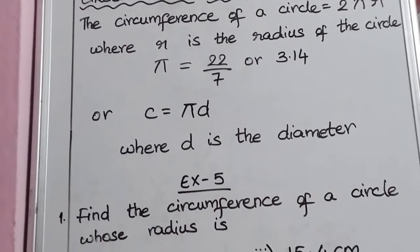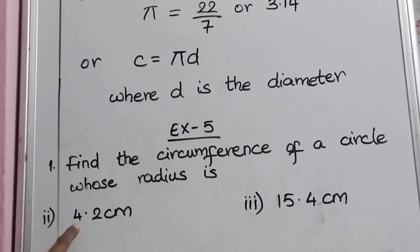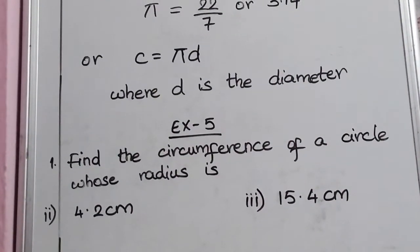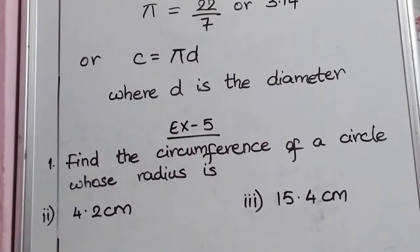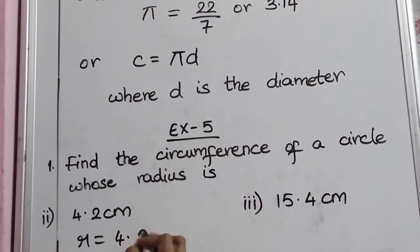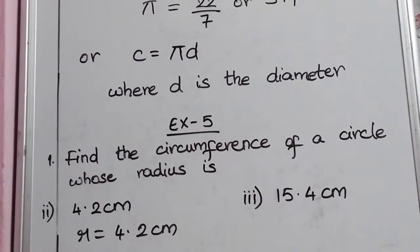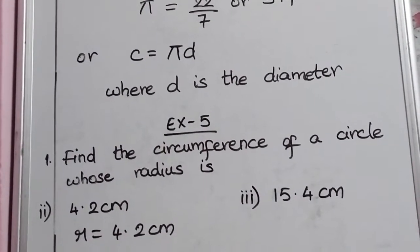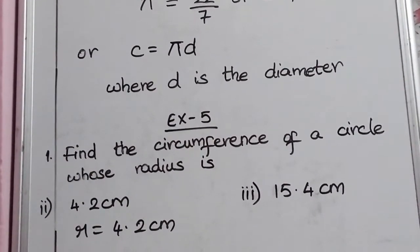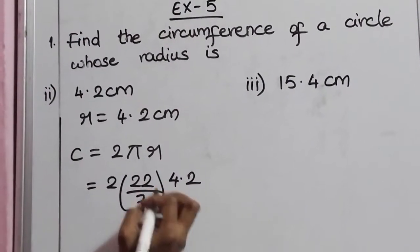Let us begin with Exercise 5, Problem 1. Find the circumference of a circle whose radius is 4.2 centimeters. The first bit is for homework; second bit and third bit we are doing now. Here radius R is given as 4.2 centimeters. So, circumference of the circle is equal to 2πR, because radius is given. 2 × (22/7) × 4.2.